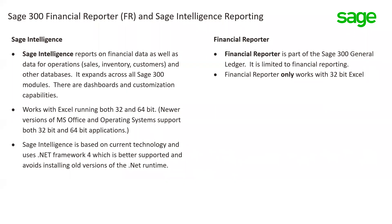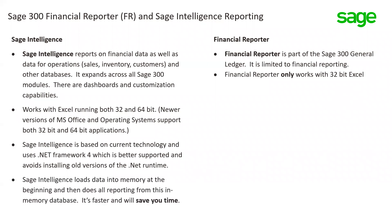Sage Intelligence works with Excel and runs both 32-bit and 64-bit, which Microsoft Office and Microsoft operating systems support. Financial Reporter works only with 32-bit Excel — something to keep in mind when thinking about the differences. Sage Intelligence is also based on .NET Framework 4, which is better supported so you won't have to install old versions. When Sage Intelligence runs a report, it loads data into memory so reports run much faster, whereas Financial Reporter takes a bit more time to run each report.